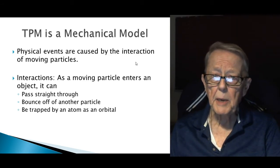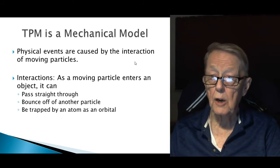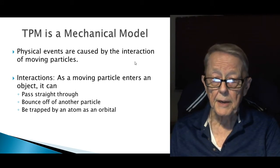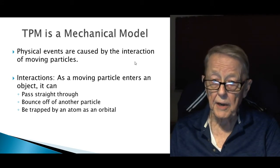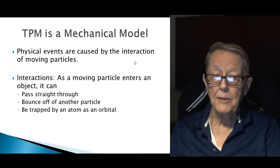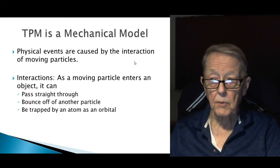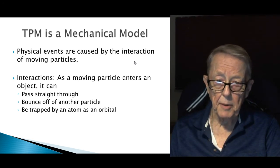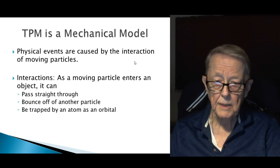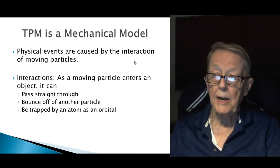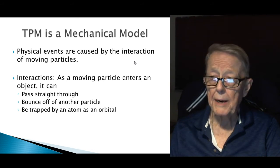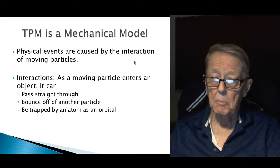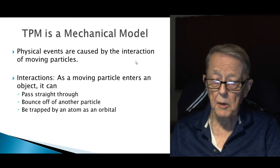Okay, it's a mechanical model. Physical events are caused by the interaction of moving particles. For example, the three interactions you can have as a moving particle enters an object: one, pass straight through, comes right through you, in my body and straight back out. It can bounce off another particle in the object, or it can be trapped by an atom as an orbital. Of course that depends on what the object is, but those are the three general things that I talk about.